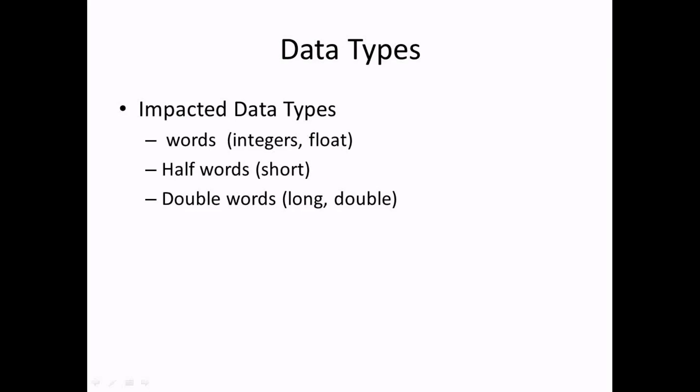Endianness issues are seen only with multi-byte data like words, half words, double words - that is int, short, long, float, double - while the byte streams like strings and characters remain unaffected by endianness.